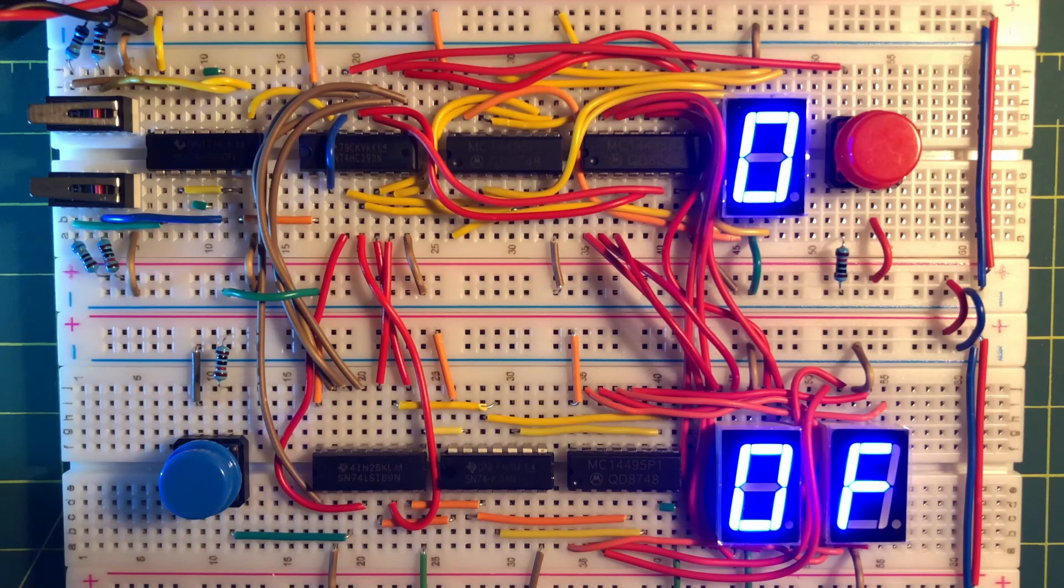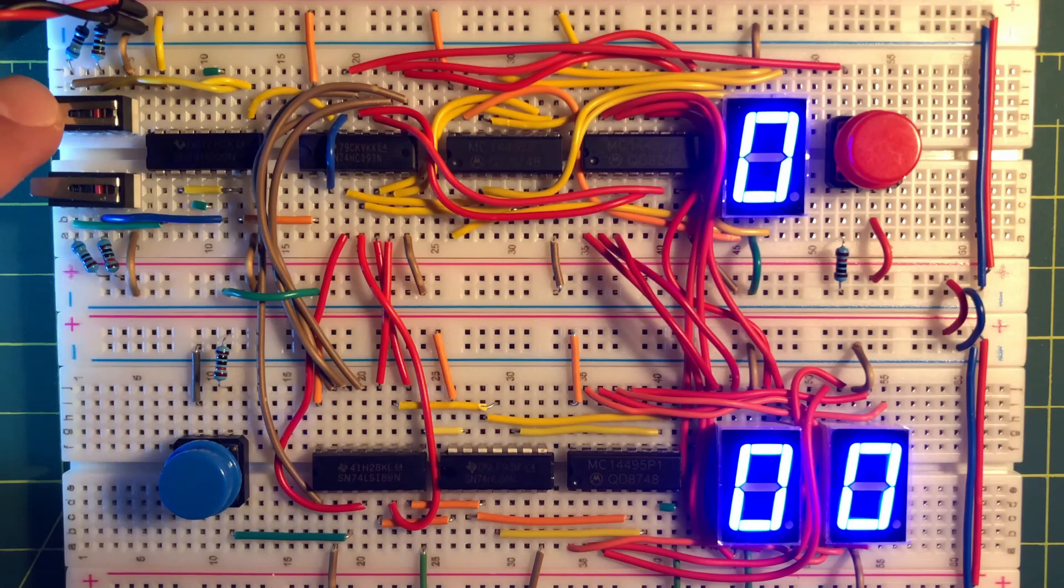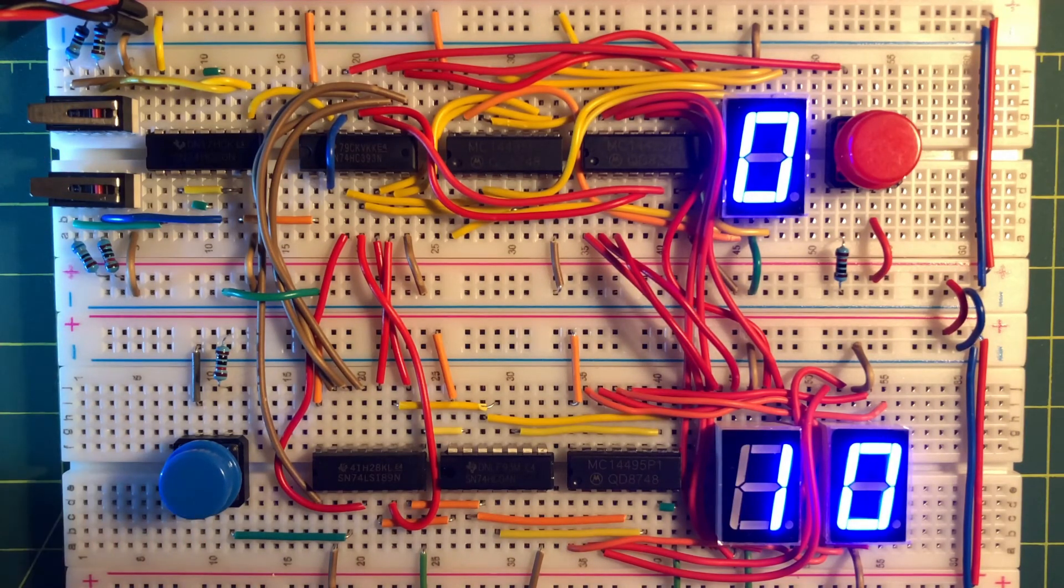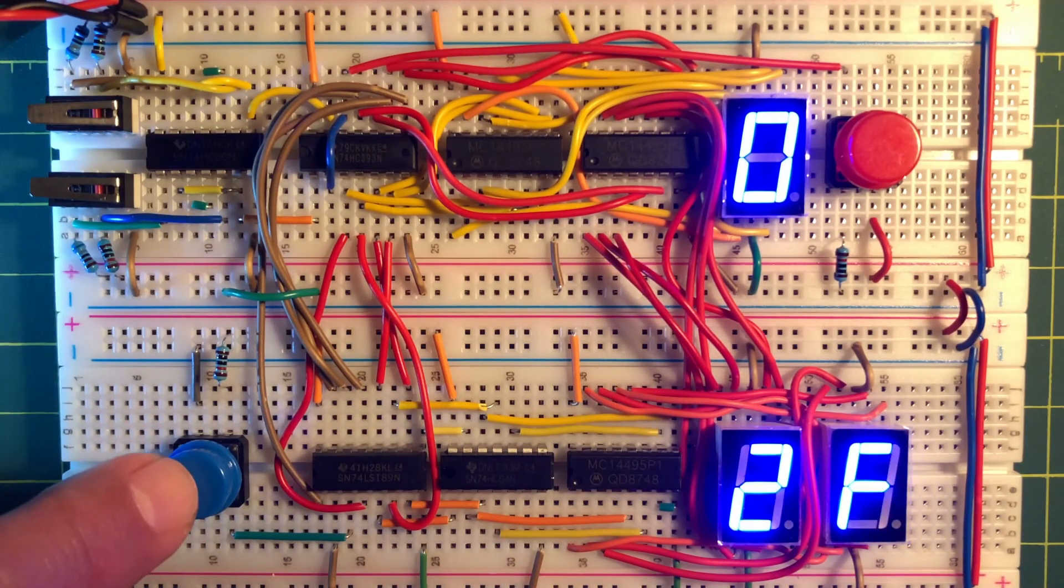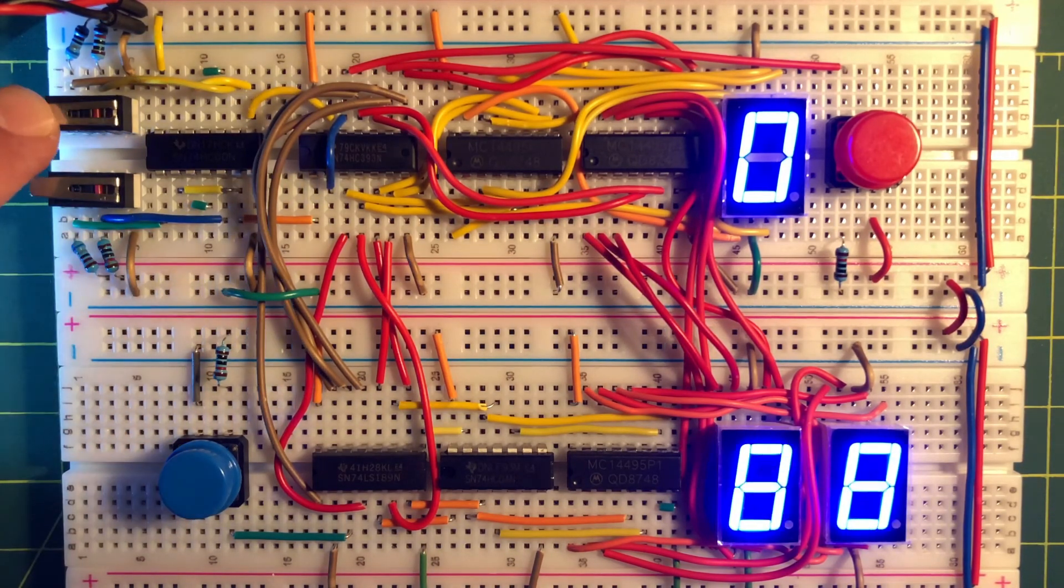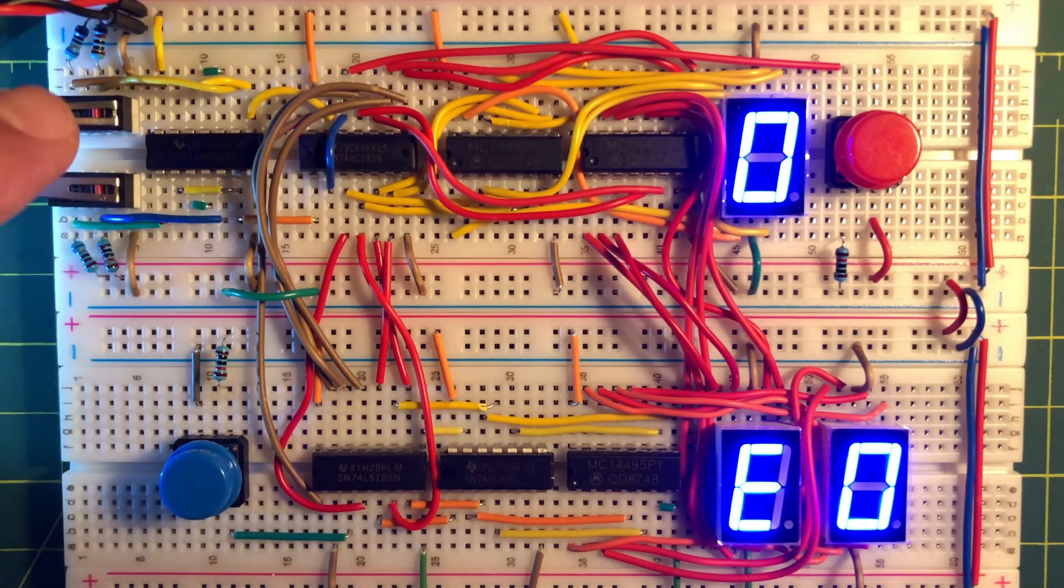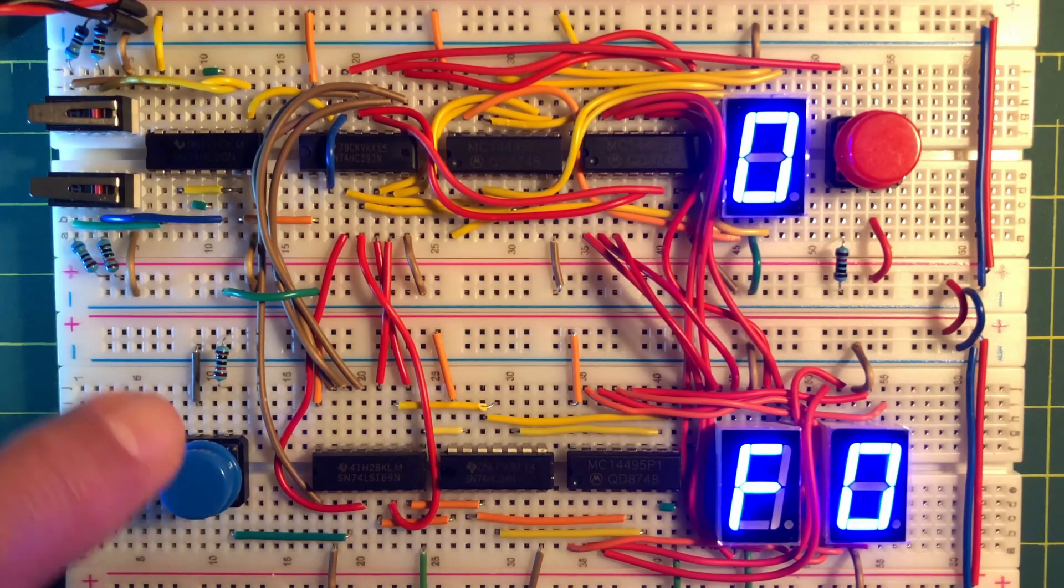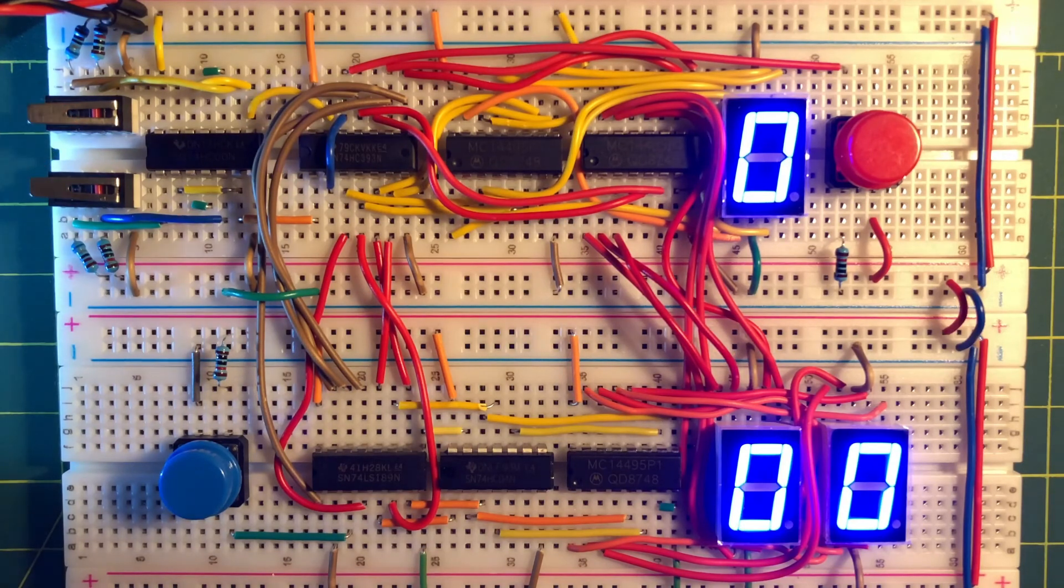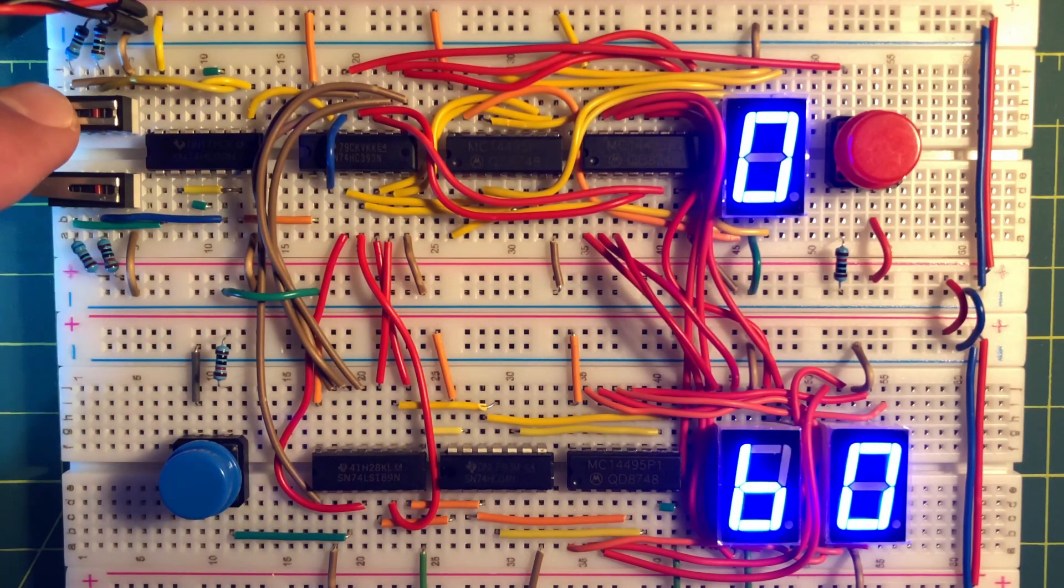In this first example we will store zeros into all of the memory locations. Now we scan through the memory locations observing that the output is zero at each location.